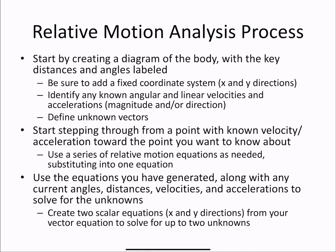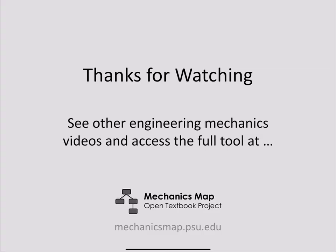Then using the equations you have generated, along with current angles, distances, and known variables of velocity and acceleration, we can solve for unknowns. Remember, you can create two scalar equations in the X and Y directions from your vector equation to solve for up to two unknowns in any relative motion problem. Thanks for watching this video. Find more videos and material at MechanicsMap.